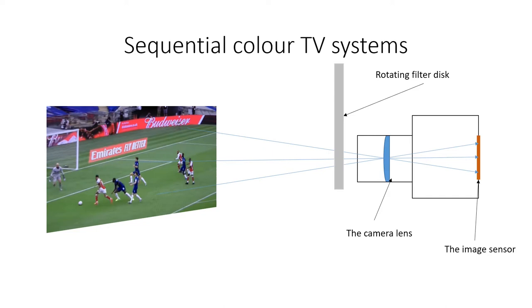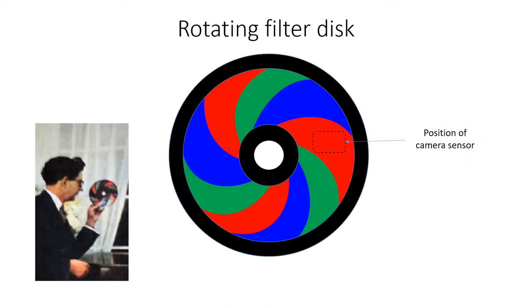These filters are like the transparent colored papers in which chocolates are wrapped. For example, if you look through a red one, everything looks red. This is because it only lets the red light through. Blue or green objects will look black. Colors which contain some red, such as purple, look dark red. This shows a simplified view of what the rotating disc in front of the camera would have looked like. The inset picture shows a Pye engineer in about 1950 looking at the rotating camera disc.